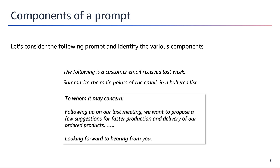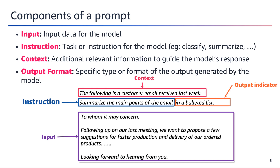A prompt is composed of various components that work together to guide a language model in generating the desired response. The input data serves as the raw material for the model to process and understand the context. The instruction component specifies the task or action the model should perform, such as classification, summarization, or generation. Providing additional context helps guide the model's response, and specifying the desired output format — whether a bulleted list, a paragraph, or a specific data format — is equally important.